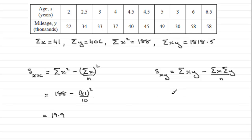And if you do the second one here, SXY, substitute the various values in, you're going to have 1818.5 for sigma XY minus 41, then multiplied by 406, and that's divided by 10. And if you do that, you find that you get exactly 153.9.